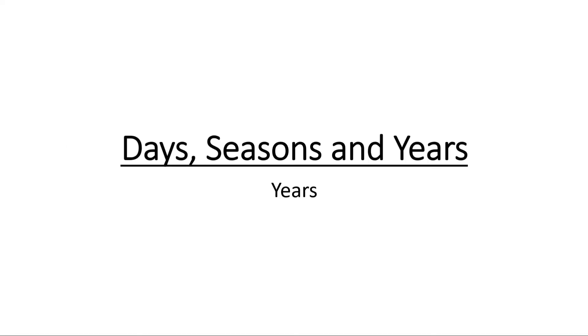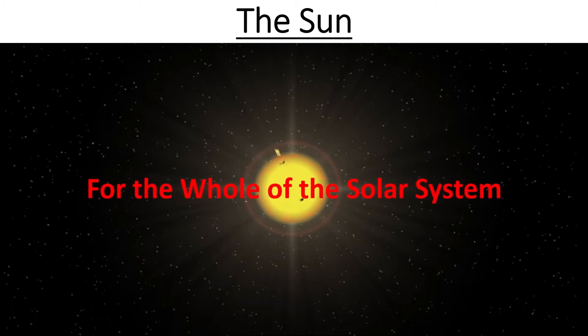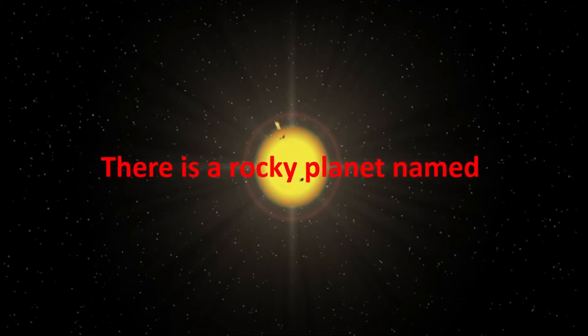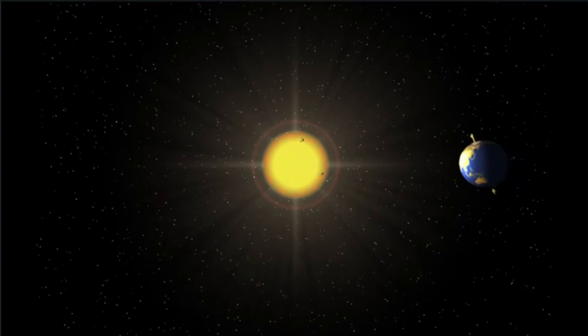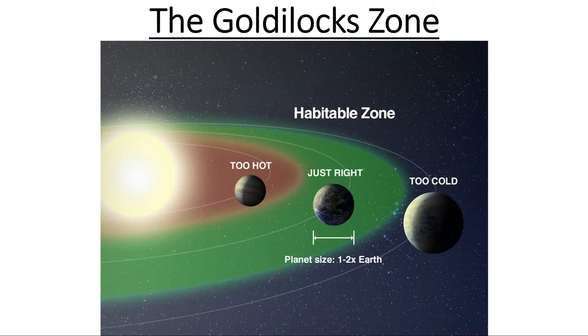Let's start with a look at the star at the centre of our solar system — the Sun. A source of light, a bringer of heat for the whole of the solar system. 152 million kilometres away, in the region known as the Goldilocks zone, there is a rocky planet named the Earth. The Sun-Earth relationship is crucial for life to exist. Not too hot, not too cold — just right for liquid water to exist.